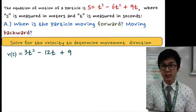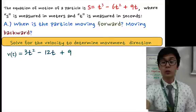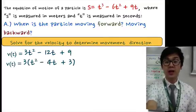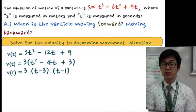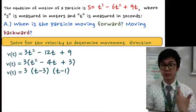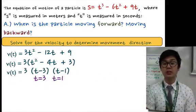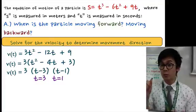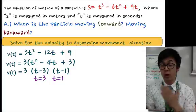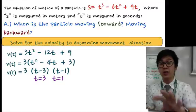After finding the velocity, we solve the quadratic equation 3t² - 12t + 9 by factoring out the GCF to get 3(t² - 4t + 3), which factors to 3(t - 3)(t - 1). Using the zero product property, t equals 3 and t equals 1. These values are the critical points for our sign chart to determine the signs of the velocity across each interval.